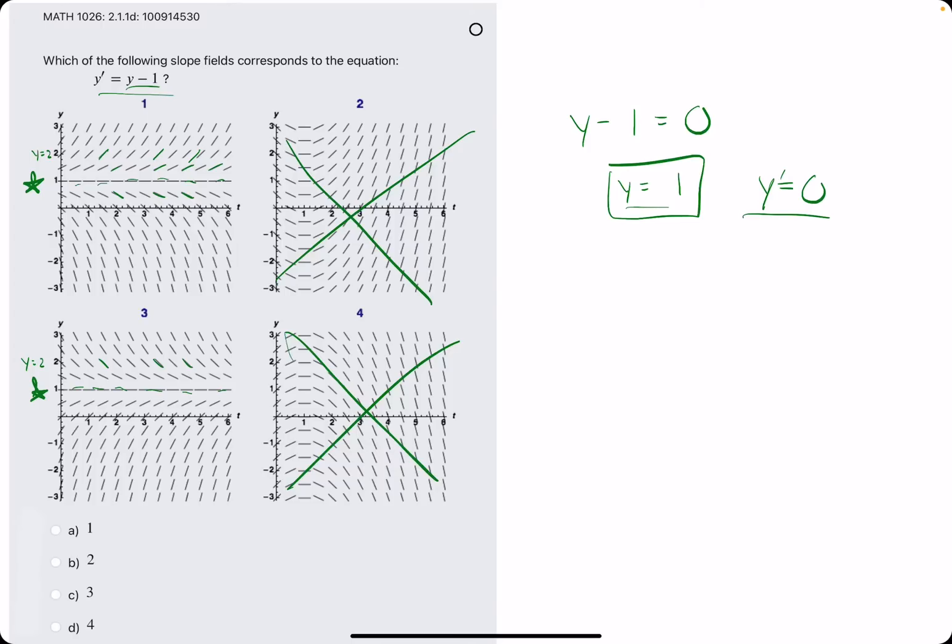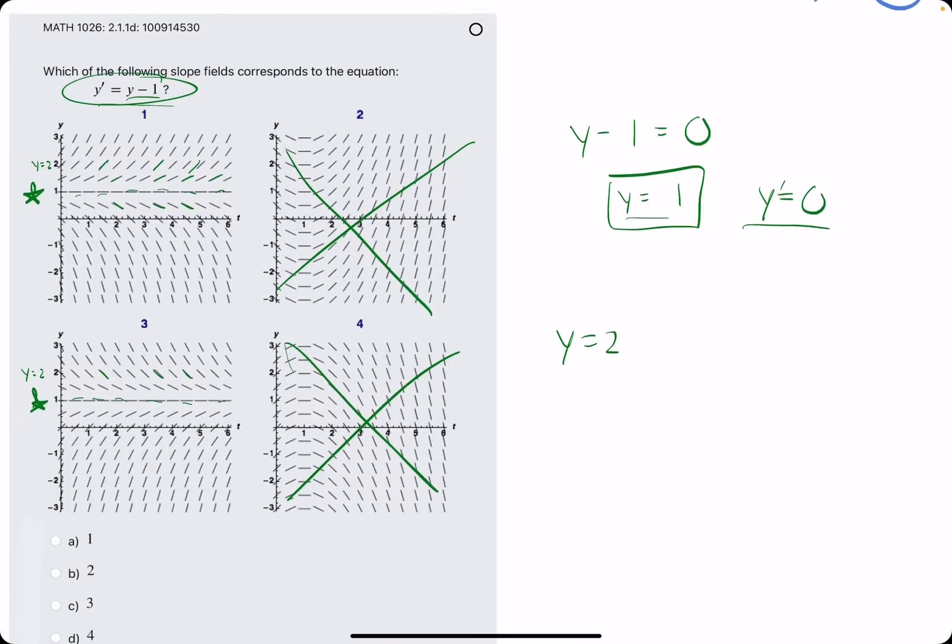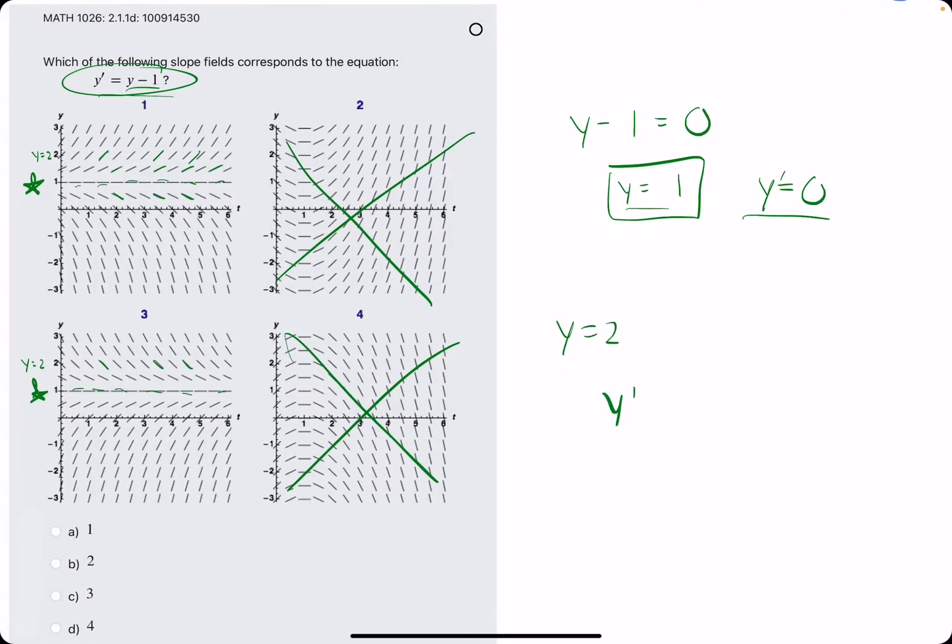If we plug y = 2 into our y' equation and analyze whether it's positive or negative, that should tell us the correct slope field. Plugging in y = 2, we have 2 - 1, which is 1.